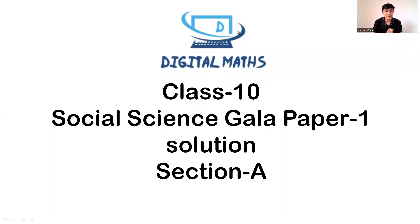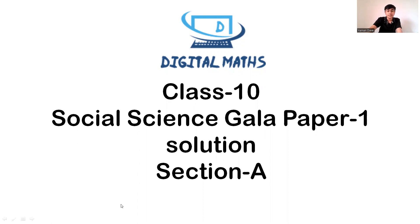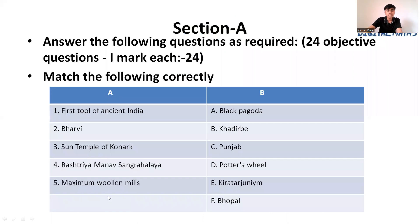Hello everyone, hope you are doing great. Today we will do Social Science gala paper one solution. In Social Science gala, the first paper has Section A. Section A has 24 objective questions, all worth one mark each, making Section A a total of 24 marks. Let's get started.